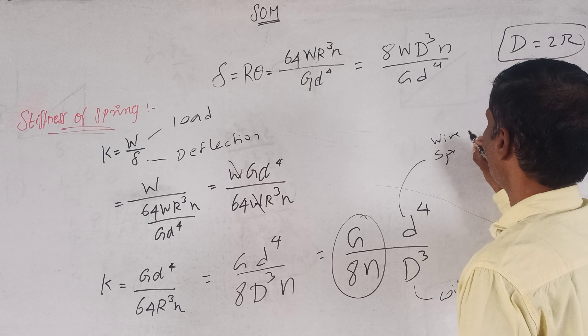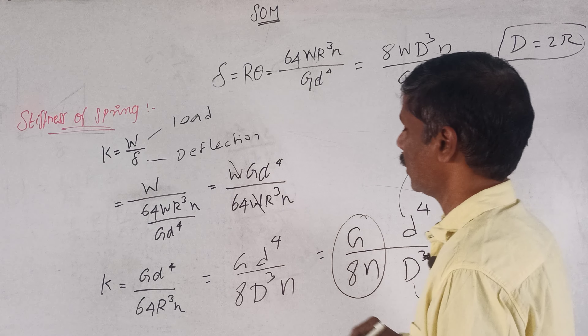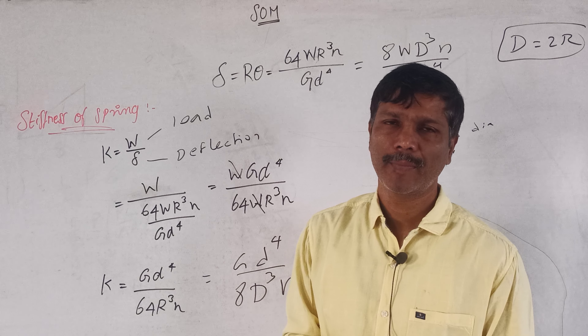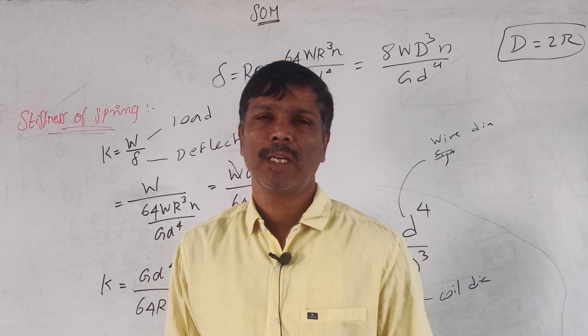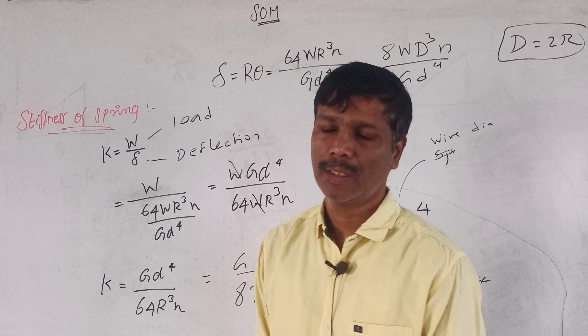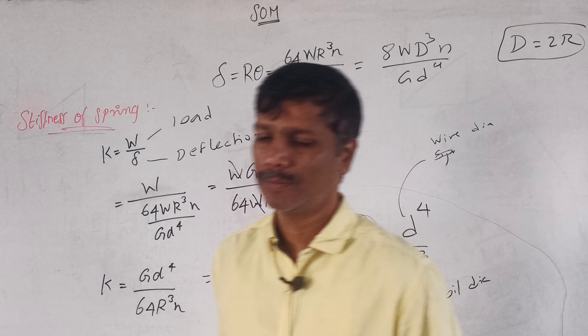This is a 3-step set. If you have a small d to the power 4, the stiffness is very big. D cubed. So if you have small d to the power 4, the stiffness is very big — D cubed. D is the coil diameter, and small d is the wire diameter.